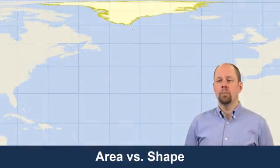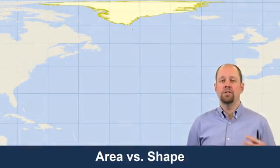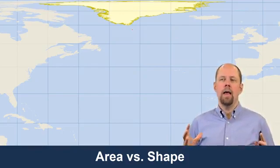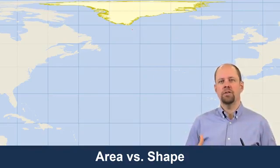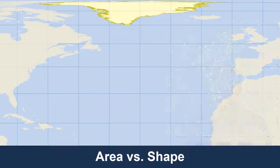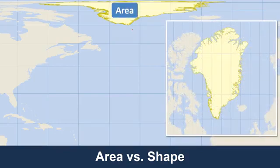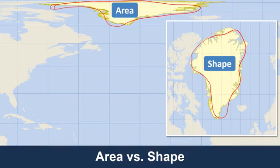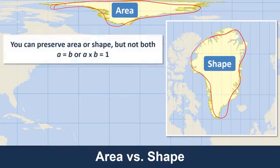This brings us to a fundamental principle about map projections: you can preserve shape or you can preserve area, but you can't do both. When you take a three-dimensional sphere or ellipsoid and flatten it onto a two-dimensional sheet of paper, something's got to give. You can either maintain shapes or sizes, but not both. We see Greenland in both maps — in one, the area is maintained but the shape is wildly distorted; in the other, the shape is accurate but the size is wildly distorted. These are two extreme versions.